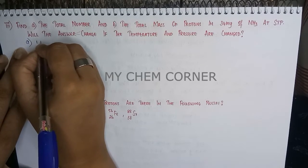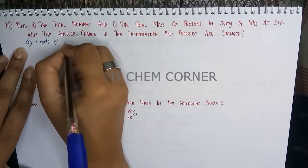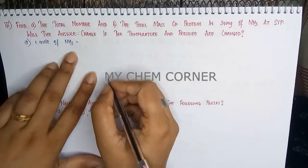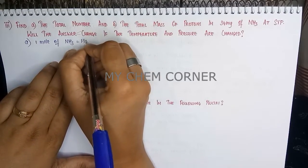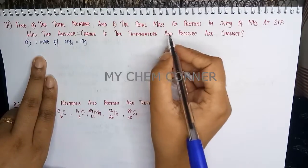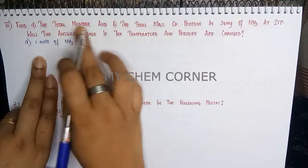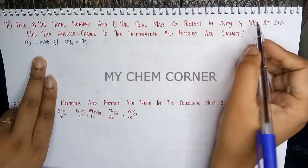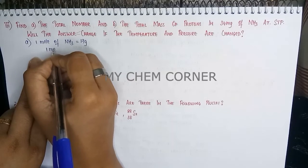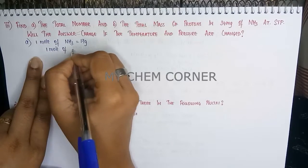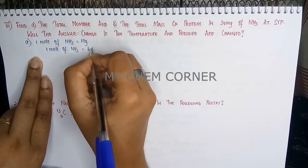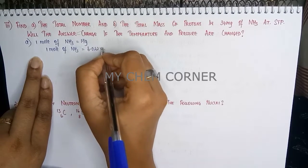One mole of ammonia is equal to 17 grams, which is the molar mass of ammonia. When we talk about the total number or total mass of protons at STP, the mole plays an important role. One mole of ammonia contains Avogadro's number of ammonia molecules.